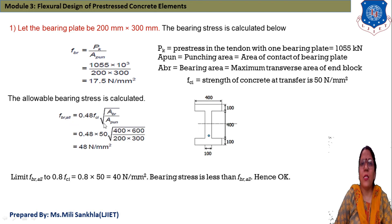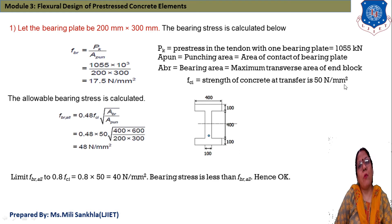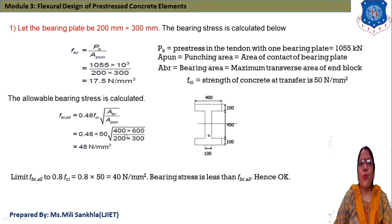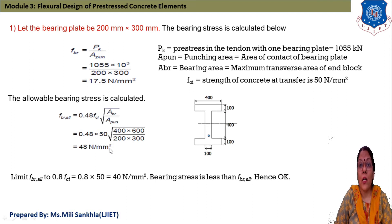Next, we find the allowable bearing stress FBR using the IS code equation: FBR = 0.48 × fci × √(Abr / Apunching). Here fci = 50 N/mm², Abr is the maximum area of the end block (400 × 600 mm), and the punching area is 200 × 300 mm. Substituting these values: √(400×600 / 200×300) gives a result. After calculation, FBR = 48 Newton per mm square.